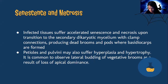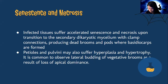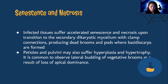When a living organism's cells or tissue die, the condition is called necrosis. It causes leaves, stems, and other parts to darken and wilt. Leaf senescence allows the degradation of nutrients produced during the growth phase of the leaf and their redistribution to developing seeds or other parts of the plant. Petioles and pulvini also suffer hyperplasia and hypertrophy. It is common to observe lateral budding of vegetative brooms as a result of loss of apical dominance. Hyperplasia is the abnormal increase in number of cells; hypertrophy is excessive growth due to the enlargement of individual cells.